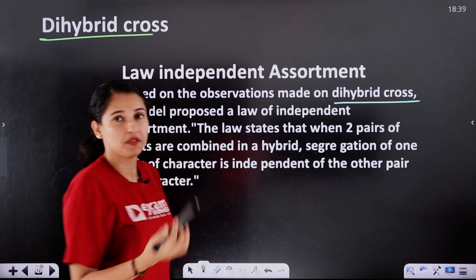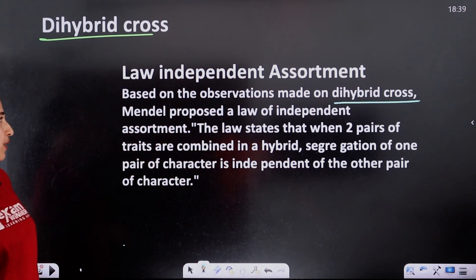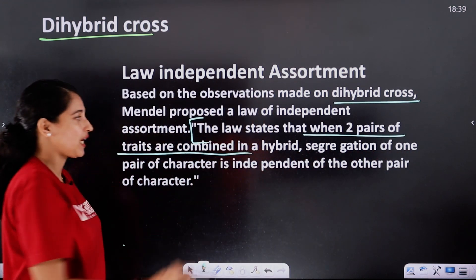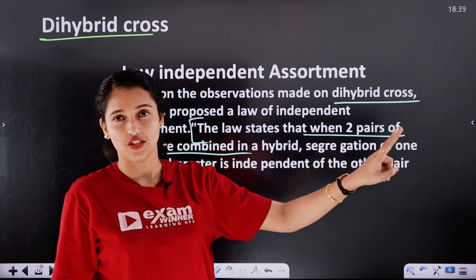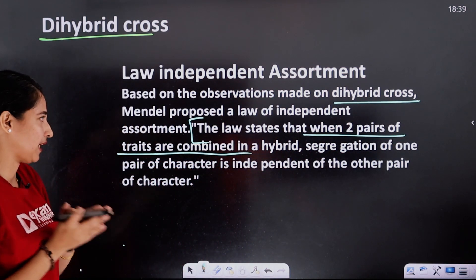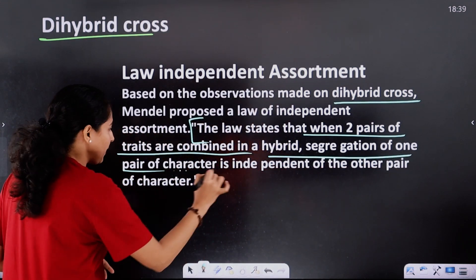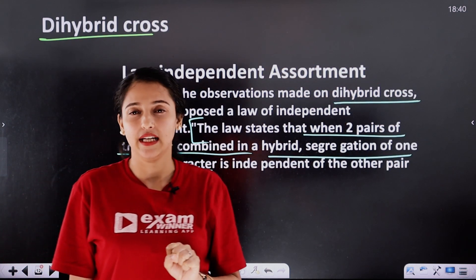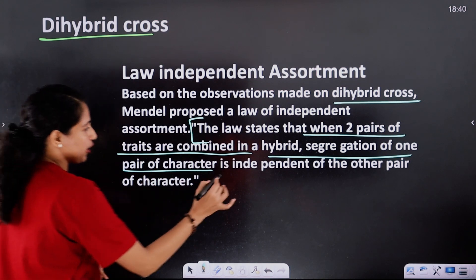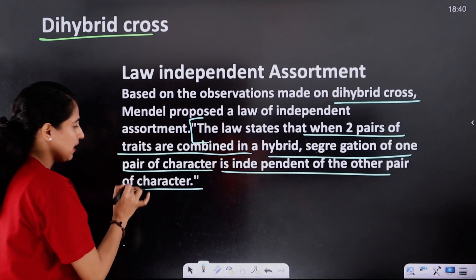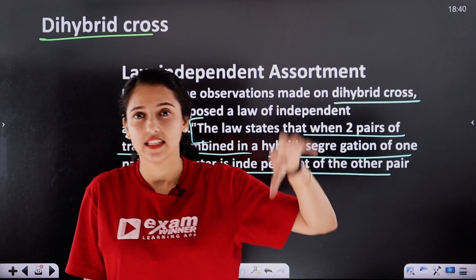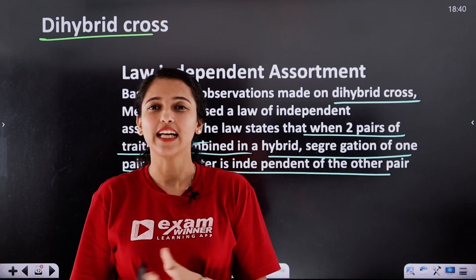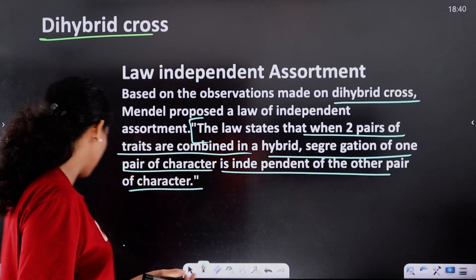In dihybrid cross, the law states that when two pairs of contrasting traits are combined, the segregation of one pair of characters is independent of the other pair. They are free to form new combinations — that is the Law of Independent Assortment.